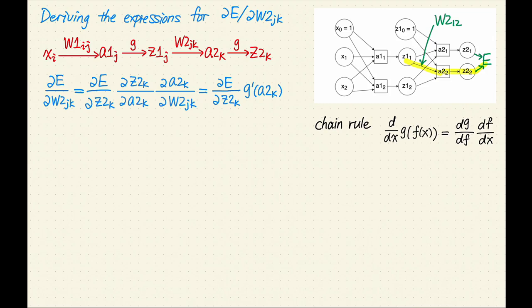How about the last term? Well, a2 is the sum of W2 multiplied by z1, so the last term should be z1 sub j, the input corresponding to the weight W2 sub jk. This expression is equivalent to the previous one, but it's easier on the eyes.